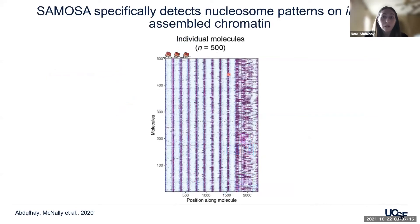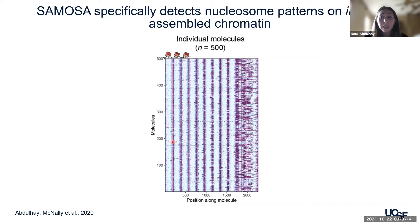This heat map shows methylation prediction of 500 individual sequenced molecules. These molecules were derived from a methylated template assembled with histones onto nine repeating WIDM-601 sequences. In the heat map, every line is a molecule, the dark purple is adenine methylation, whereas the light blue is no methylation. The predicted methylation is only seen in the accessible linker DNA regions along the molecule, while inaccessible regions containing assembled nucleosomes were unmethylated. We show that we can use this adenine methyltransferase to methylate linker DNA specifically, and map single molecule nucleosome footprints at high resolution.